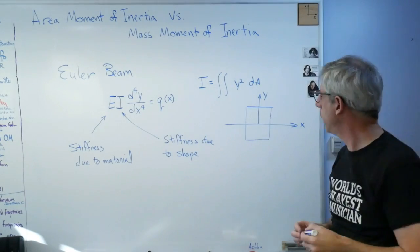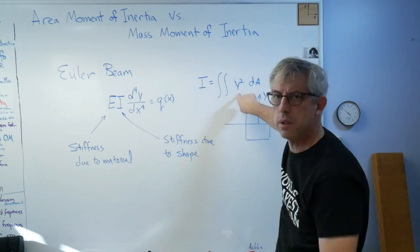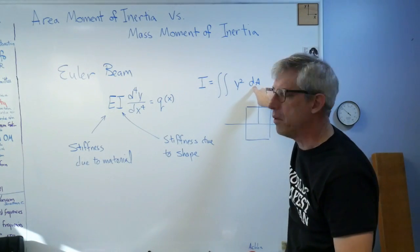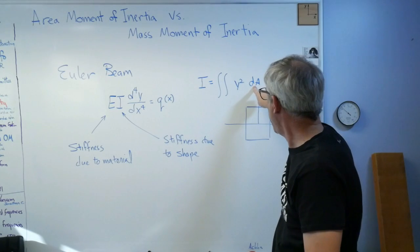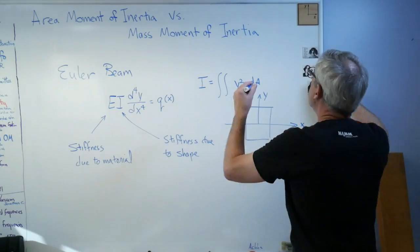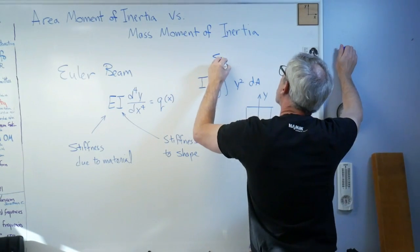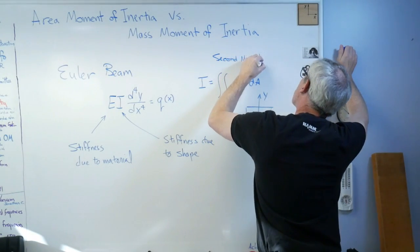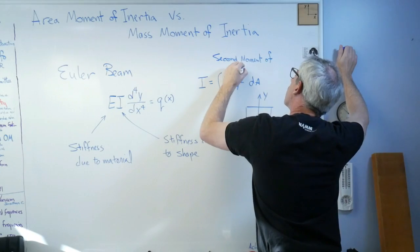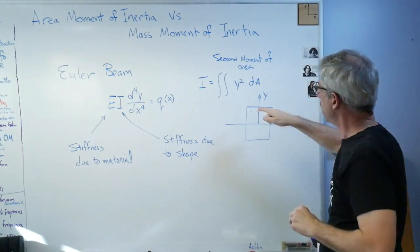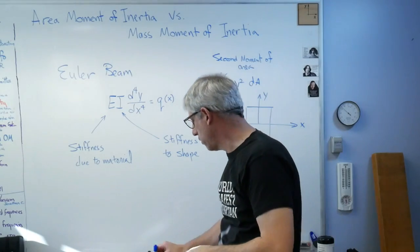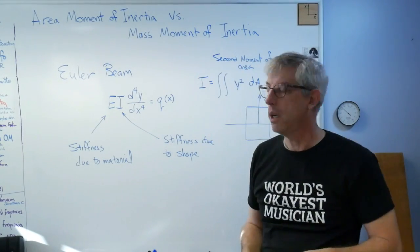And by shape I mean cross-sectional shape. It actually is a function of length too, but this is a cross-sectional term. Well, if I want to know what this is, I've got to do this integral - y squared dA. If you're trying to find the stiffness of a beam with that cross-section, that's the integral for I. Wait a minute - that's a distance squared times an area. That's our function. That's a second moment of area.